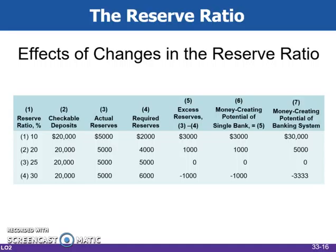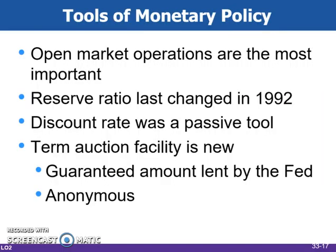First, by changing the amount of excess reserves, and second, by changing the size of the monetary multiplier. The open market operations are the most important tool in the Fed's arsenal. It gives the Fed great flexibility in controlling the money supply and the impact on the money supply is swift.